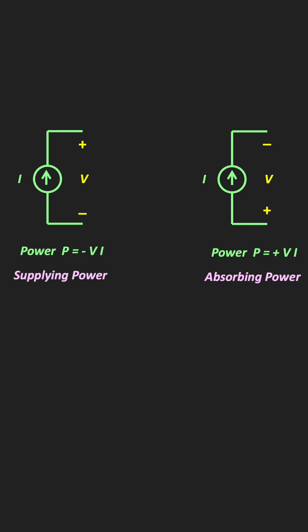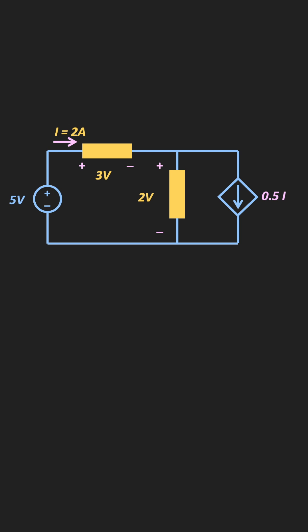In this way, from the sign convention, we can easily find whether the element is supplying or absorbing the power. Similarly, for the given circuit, find out whether the current source is supplying or absorbing the power, and let me know the absorbed or supplied power in the comment section.